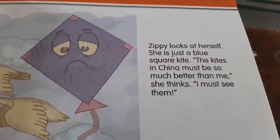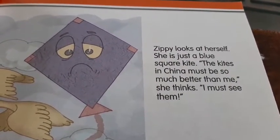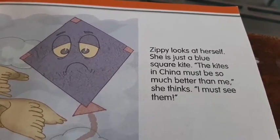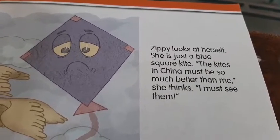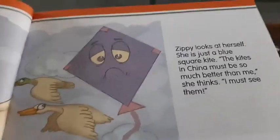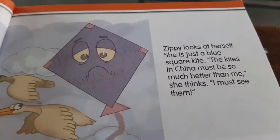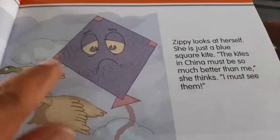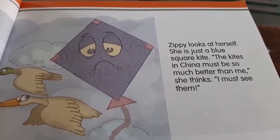Zippy looks at herself. She is just a blue square kite. The kites in China must be so much better than me, she thinks. I must see them. Zippy is thinking that by listening to the birds' conversation, Chinese kites might be so beautiful.